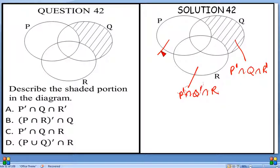Now, this place is P prime intersection Q prime intersection R prime.